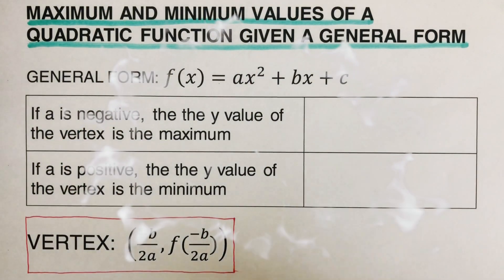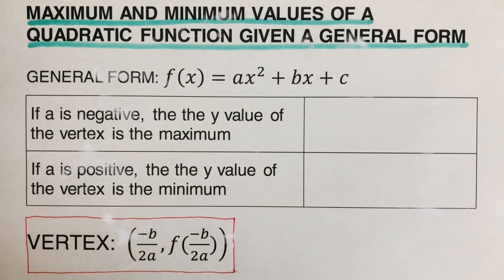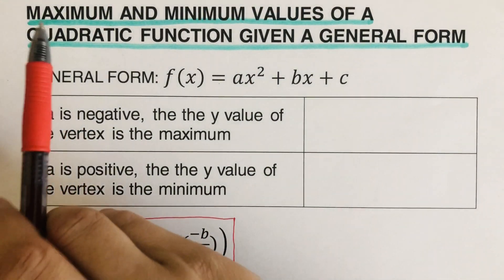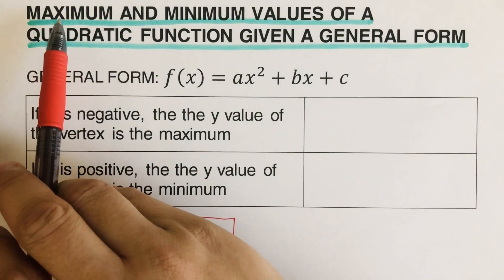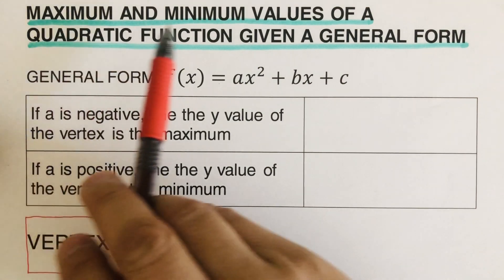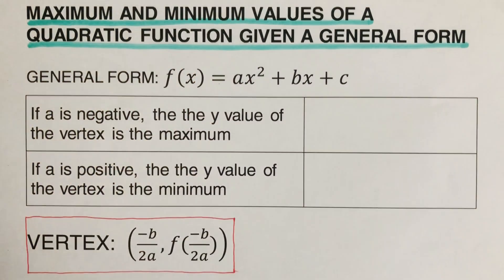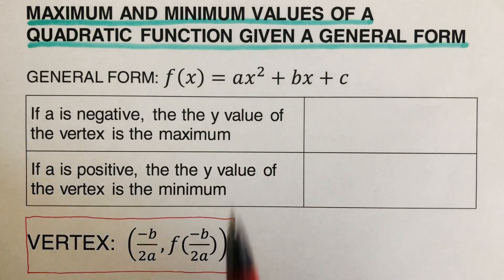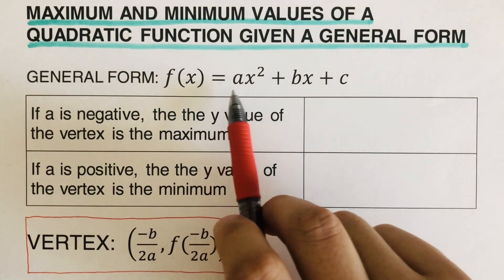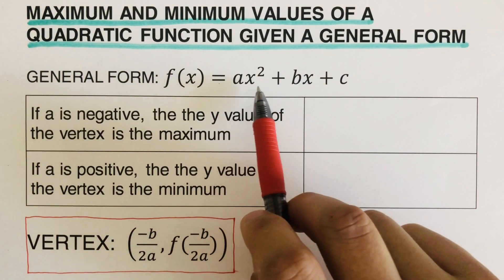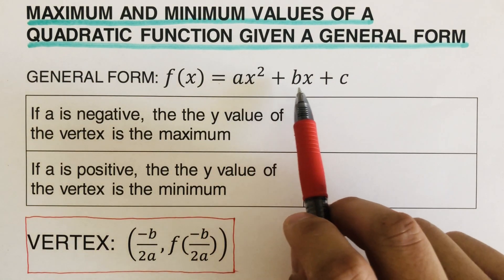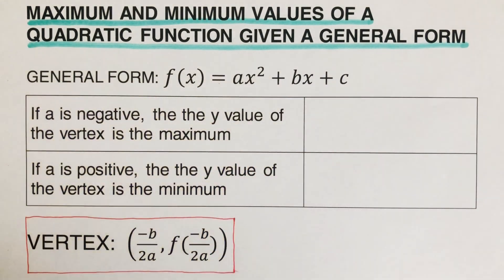Hello, everyone. Today we're going to determine the maximum and minimum values of a quadratic function given a general form. So we have the general form right here: ax squared plus bx plus c.